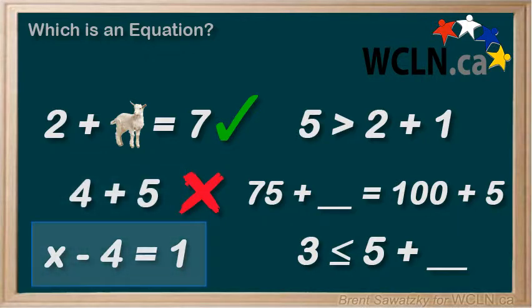Third one, x minus 4 equals 1. Well, we're not sure what the x represents, but it must be our unknown.